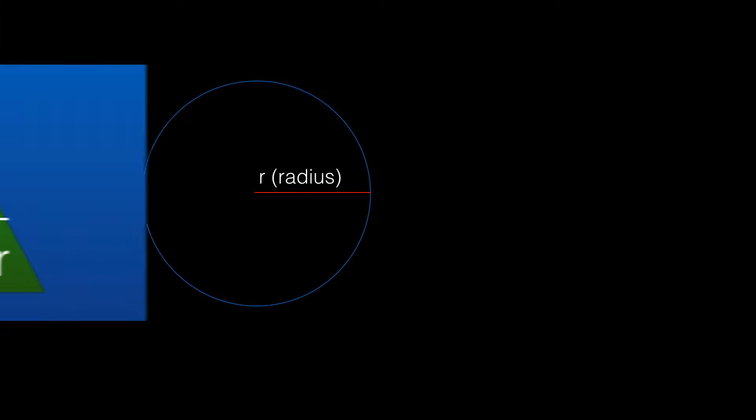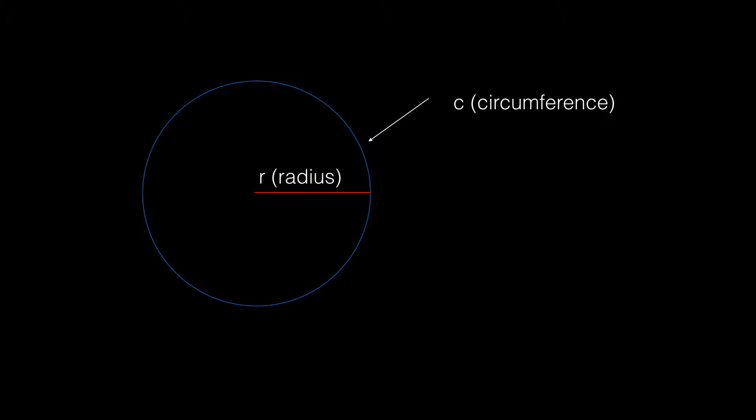Let's have a look at the circle again. There's the radius and there's the circumference, and there is the equation that we have just derived. This is saying to us that there are 2 pi radii or radiuses in the circumference of a circle.